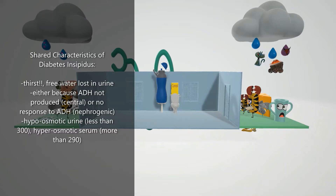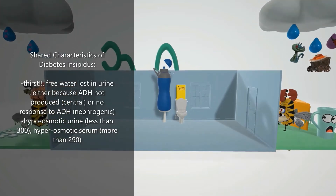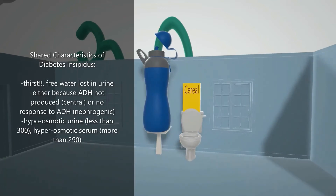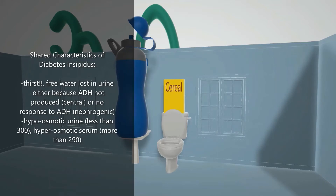We'll begin with shared characteristics of both types. In this bathroom scene, insects are trying to get to the bathroom and want the water bottle because they're so thirsty. A primary sign of diabetes insipidus is extreme thirst, because they lose so much water in the urine. In diabetes insipidus there's a lack of production of, or response to, ADH, and since ADH is responsible for water retention the patient loses lots of water.